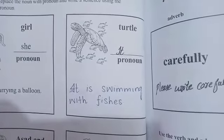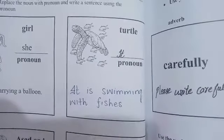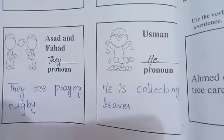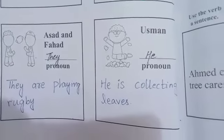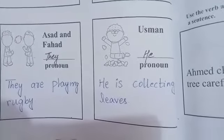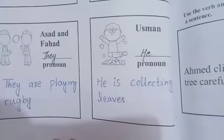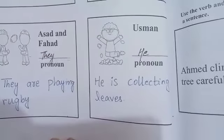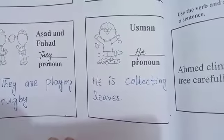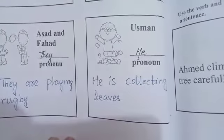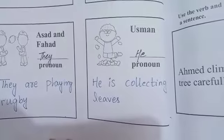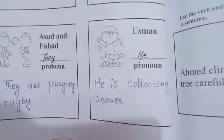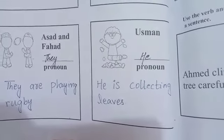In the next figure, Asad and Fahad, two boys, are playing. Since Asad and Fahad are plural nouns, they can be replaced with the pronoun 'they'. The sentence according to the picture is: they are playing rugby.